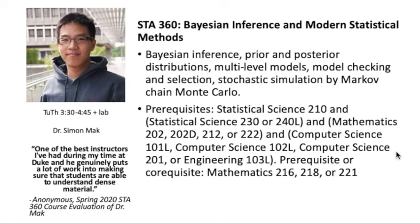The next course we're offering is a core course, STAT 360, Bayesian Inference and Modern Statistical Methods. This course is one of the key components of our undergraduate curriculum. It covers Bayesian inference, the ideas of prior and posterior distributions, goes into multi-level modeling, model checking and model selection, and stochastic simulation using MCMC. Professor Mack gets really rave reviews for teaching this course — you can see a quote from one of his recent teaching evaluations. Prerequisites include multivariable calculus, linear algebra as a co-requisite, a computer science requirement, and completed regression and probability in statistical science.